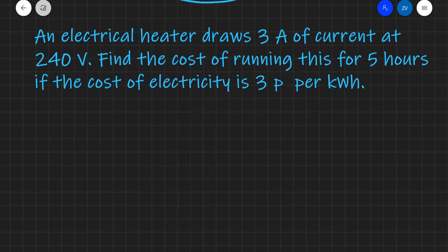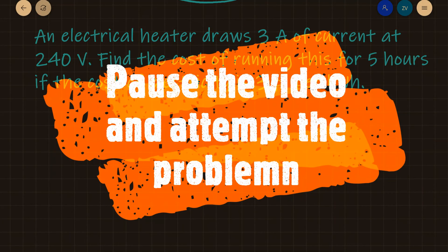Now let's apply what we have learned so far to a problem. We have an electrical heater which draws three amps of current at 240 volts. Find the cost of running this for five hours if the cost of electricity is 3 pence per kilowatt hour. And this will be a perfect opportunity for you guys to pause this video and attempt the problem.